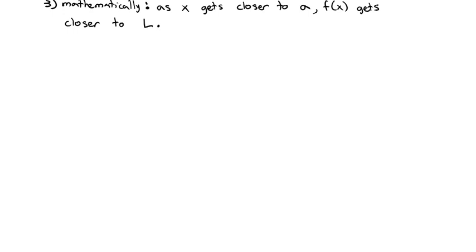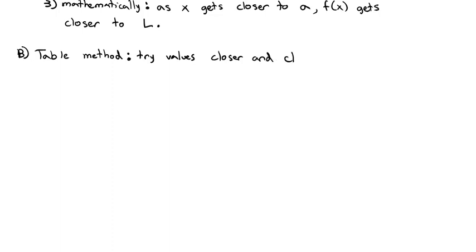There are two main ways we're going to find a limit. The first way is the table method, where we basically take that definition — as x gets closer to a — and try values closer and closer to a. We're going to find the limit as x approaches 2 of x squared minus 4 over x minus 2.